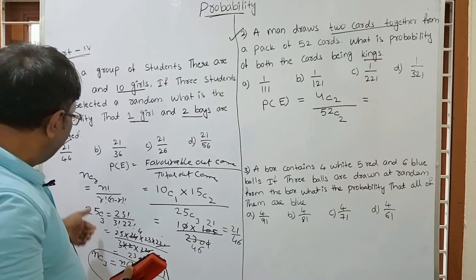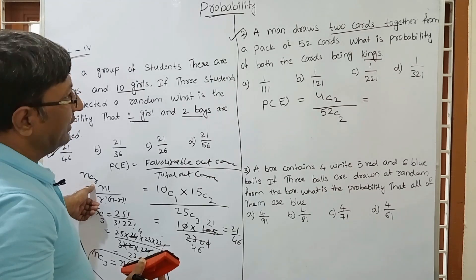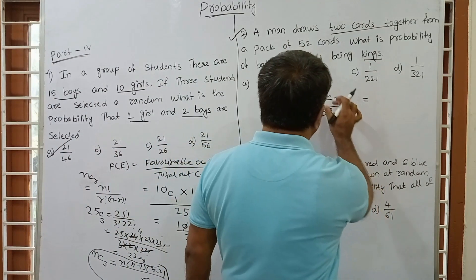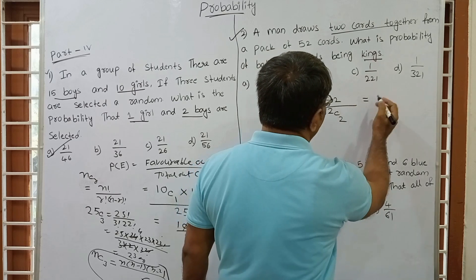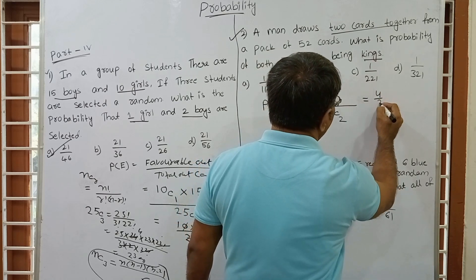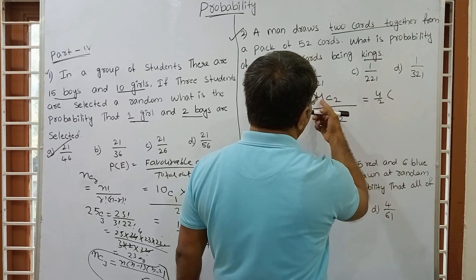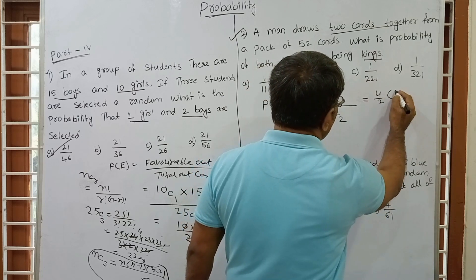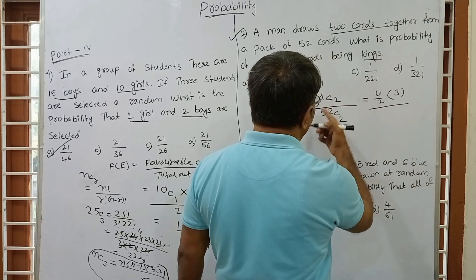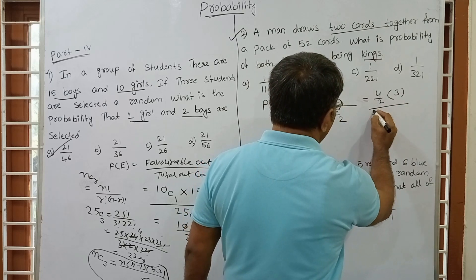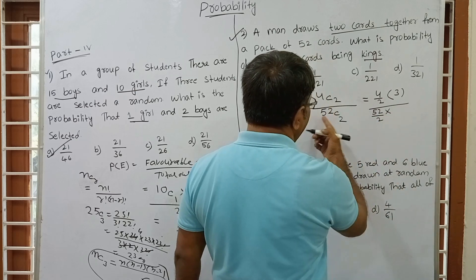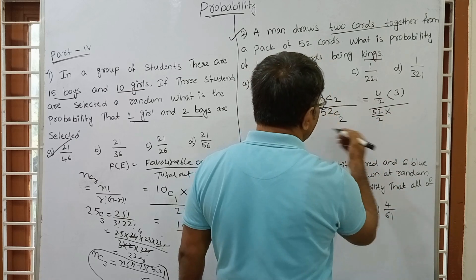Using the NC2 trick: 4C2 = (4 × 3) / 2 = 6. And 52C2 = (52 × 51) / 2. Simplifying: the 2s cancel, giving 4C2 / 52C2 = (4 × 3) / (52 × 51).